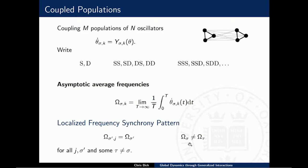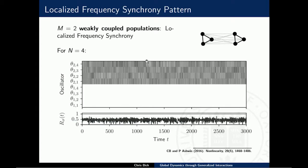Let me give an example with two populations of four oscillators each. In the same kind of plot — oscillators on the y-axis, time on the x-axis — you can see that relative to the first oscillator, the entire first population evolves at exactly the same phase speed because they are exactly phase synchronized. Whereas the other population evolves at a different speed — the color changes constantly. You can show numerically that there are chaotic fluctuations within that population. But the important point is that you have localized frequency synchrony: one part of the network evolves at a different frequency than the other.